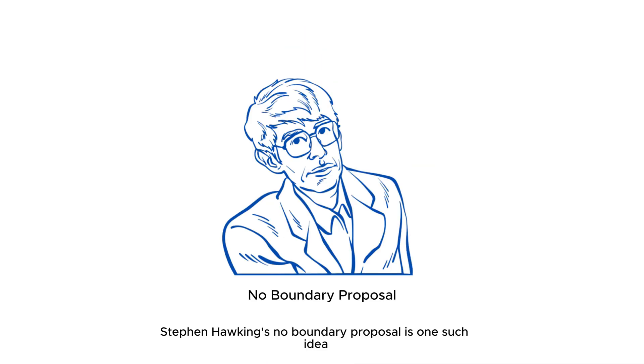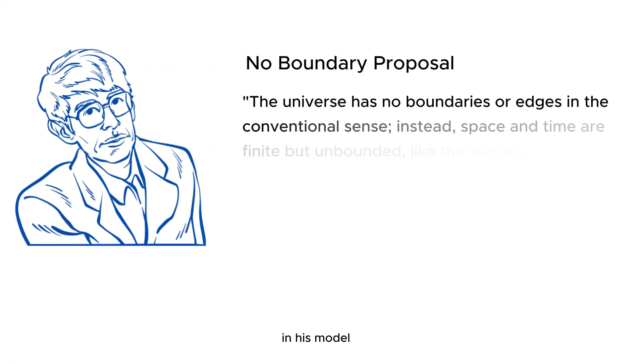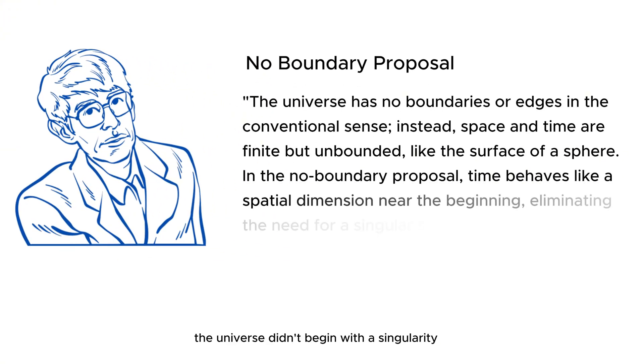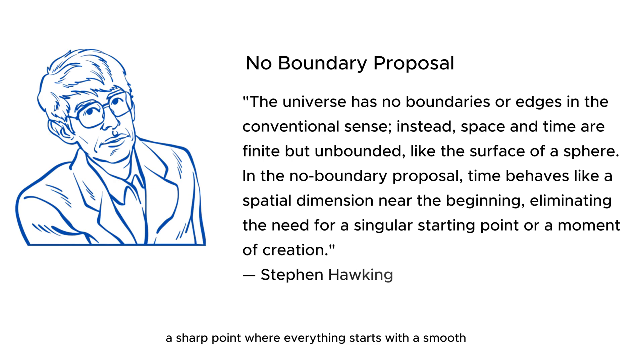Stephen Hawking's no-boundary proposal is one such idea. In his model, the universe didn't begin with a singularity, a sharp point where everything starts, but with a smooth, rounded surface. In this model, the early universe didn't have a clear beginning, and time wasn't sharply defined at first. Instead, time gradually emerged as the universe expanded.